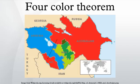Three colors are adequate for simpler maps, but an additional fourth color is required for some maps, such as a map in which one region is surrounded by an odd number of other regions that touch each other in a cycle. The five-color theorem, which has a short elementary proof, states that five colors suffice to color a map and was proven in the late 19th century. However, proving that four colors suffice turned out to be significantly harder.